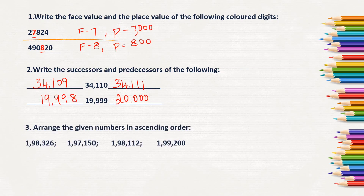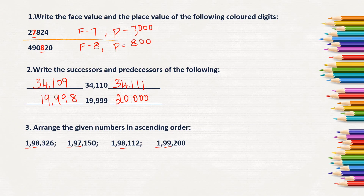Next question: arrange the given numbers in ascending order, meaning smallest to greatest. All the given numbers are 8 digits. We compare from the leftmost, highest-value digit. In all numbers, 1 is at the highest value. Looking at the thousands place, we have 98, 97, 98, and 99. The smallest is 97, so the smallest number is 1,00,97,150.